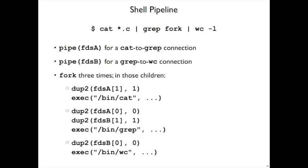So a shell process will create those two pipes, and it's going to fork three times, once for each of these processes. And the first process for cat, before it actually executes the cat, it will set the output of the cat process to go to the fdsA pipe.